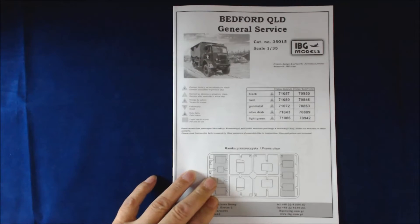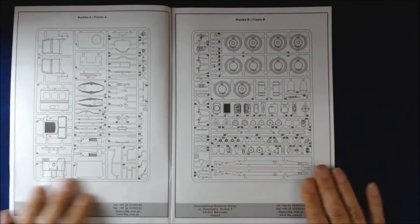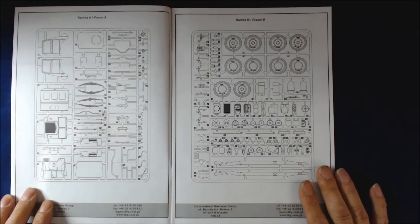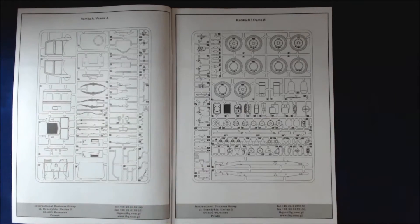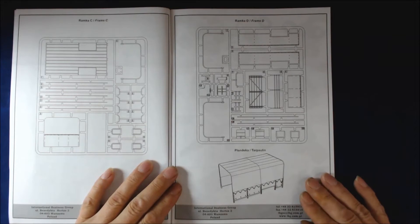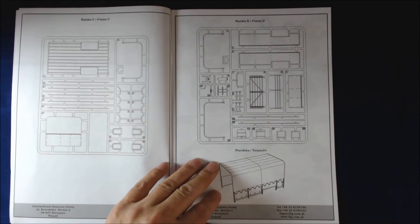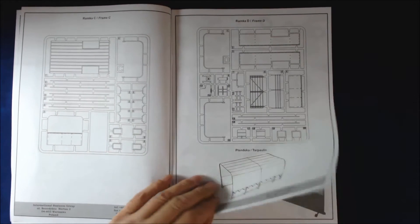Sprue map on the front for your clear parts, in light gray to show you the bits that you're not going to be using on this kit. First two pages got the two of the sprue maps nice and large, and second two pages we've got the other sprues.